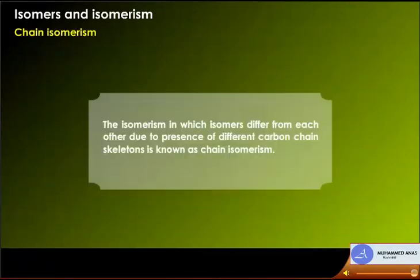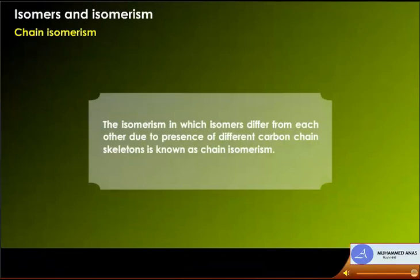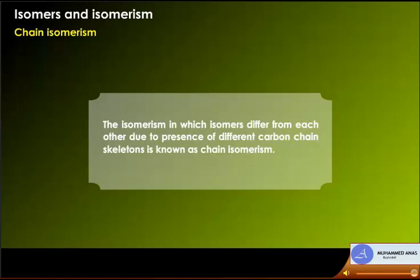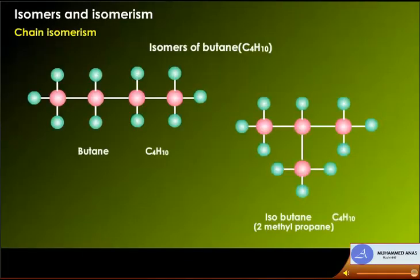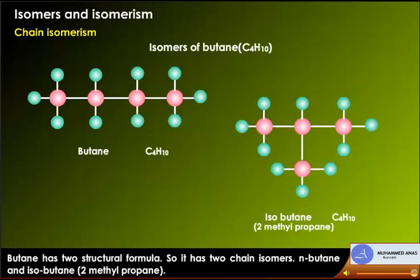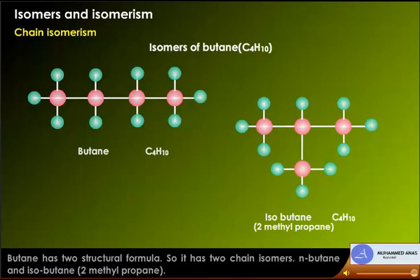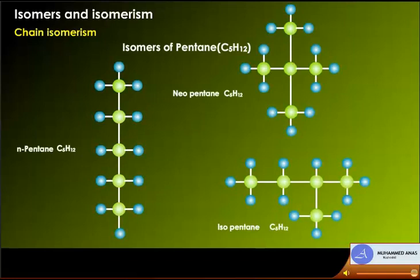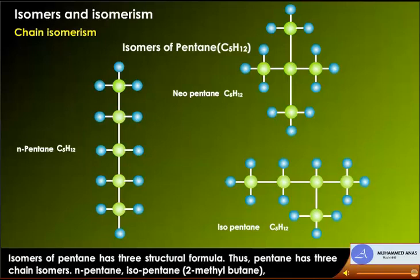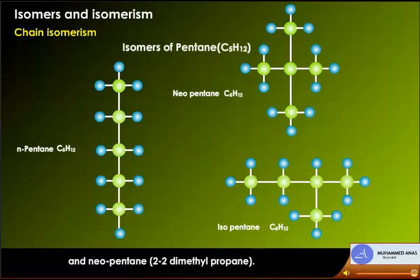Chain isomerism: isomers that differ due to different carbon chain skeletons. For example, butane C4H10 has two chain isomers: n-butane and isobutane (2-methylpropane). Pentane C5H12 has three chain isomers: n-pentane, isopentane (2-methylbutane), and neopentane (2,2-dimethylpropane).